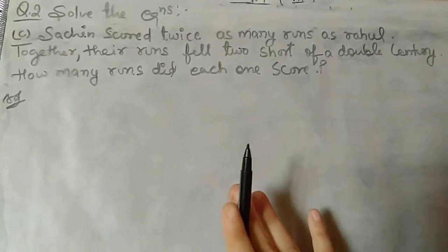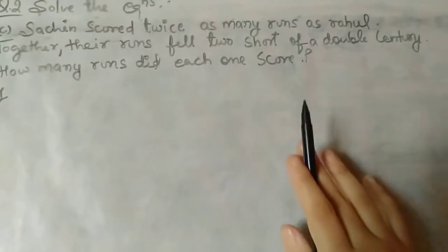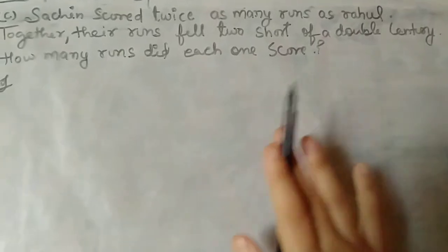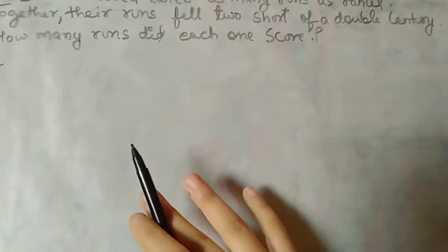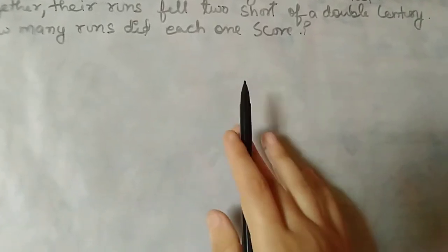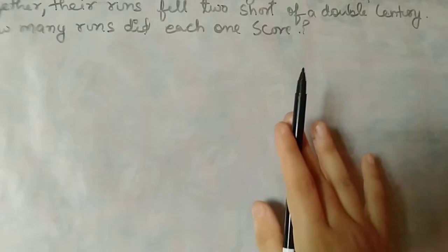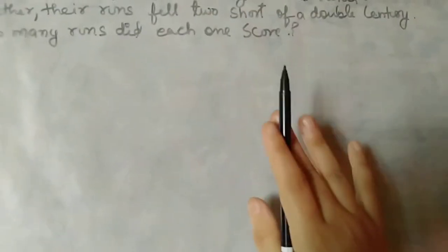Sachin scored twice, meaning double of Rahul's runs. Whatever runs Rahul made, Sachin made double of that. Together, their runs fell two short of a double century.